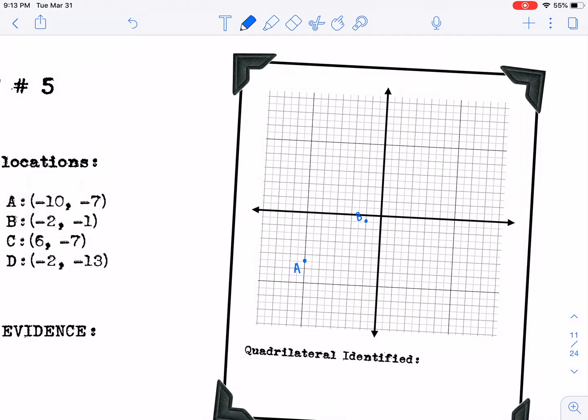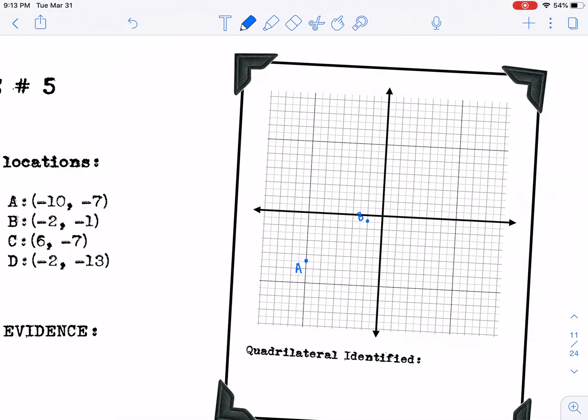C is 6, negative 7. So 2, 4, 6, 2, 4, 6, 7. And that is point C.